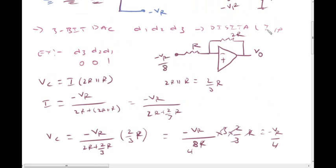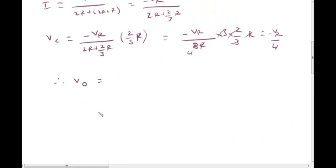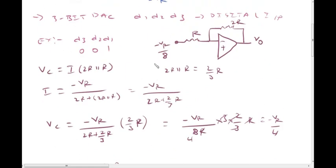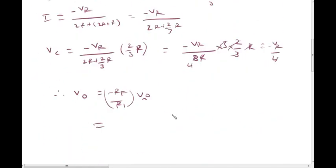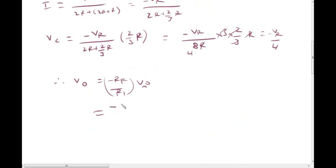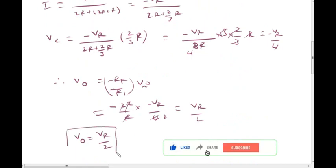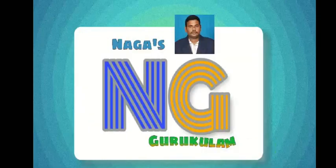The output voltage V-naught equals Vr divided by 2R, derived from the equivalent resistance calculation through the R-2R ladder network.